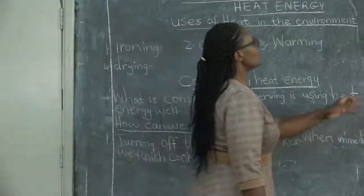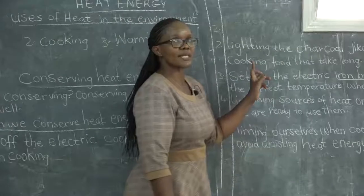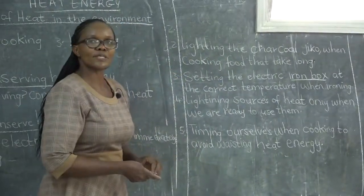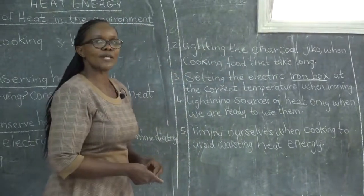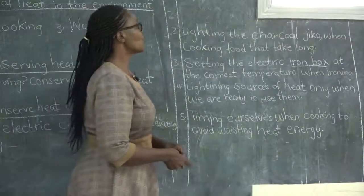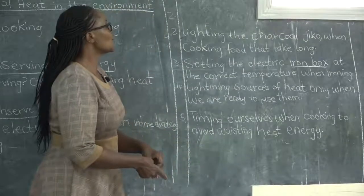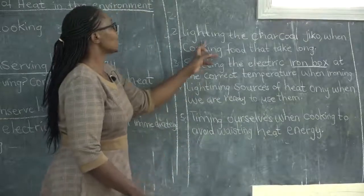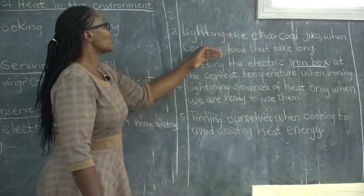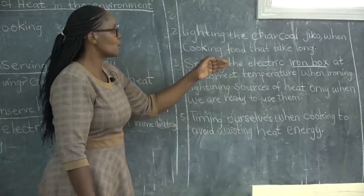Another way we can conserve heat is: when you are cooking with dairy, you are not supposed to use the electric cooker because you are going to waste heat energy. You are supposed to light the charcoal jiko, because when you cook dairy it will take too long to be cooked.